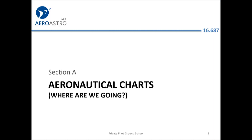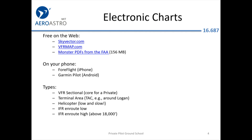So aeronautical charts, they kind of help you out with where you're going. There are actually a number of electronic charts. There are a couple of websites — skyvector.com is a great website that shows these charts. There's a search bar so you can type in an airport, and it'll zoom right in to that chart.